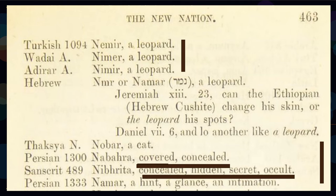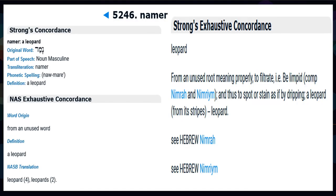A leopard, as you know, is a big cat predator. You can see in Persian that variations of this word involve the idea of being concealed, covered, hidden, and secret — and if you recall our translations of Africa, that is also related to all of those constructs. Here you can see in Strong's Concordance that Namir and Namar is a leopard, and this again is related to Nimrod.